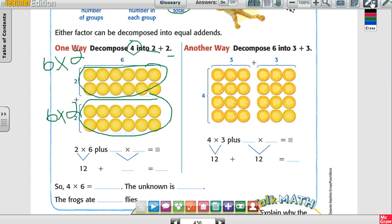So 6 times 2 plus 6 times 2, or 2 times 6, is 12. And 12 plus 12 is? 12 plus 12. 24.